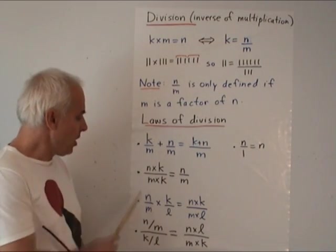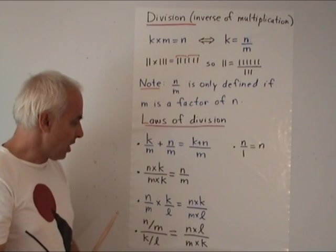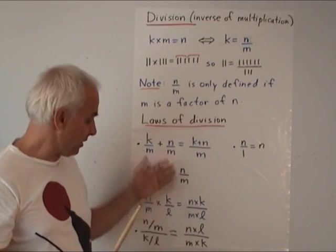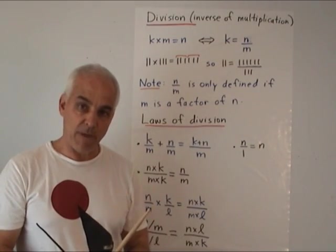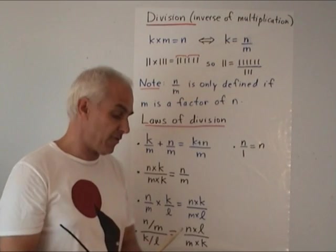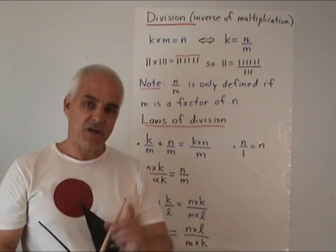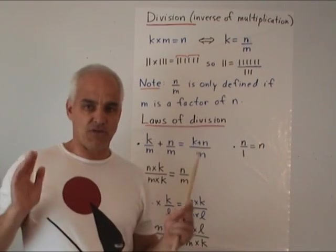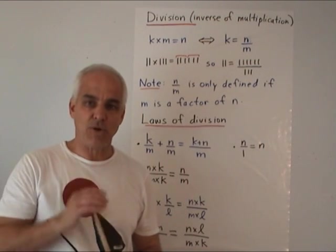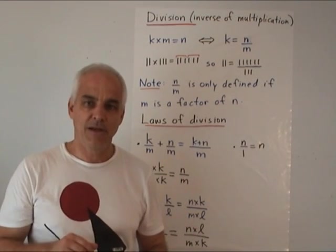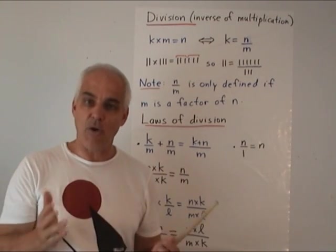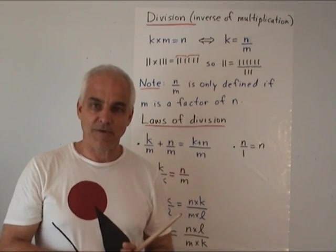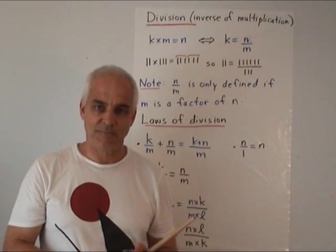These laws need some discussion and we are going to talk about them and why they are true — it's a really important and difficult aspect of primary school mathematics to understand these laws. But in the next video I want to do something a little bit different: I want to discuss the implications of what we've done so far for primary school education — how this approach can inform how we should be teaching children basic mathematics. I hope you'll join me for that. I'm Norman Wahlberger, thanks for listening.